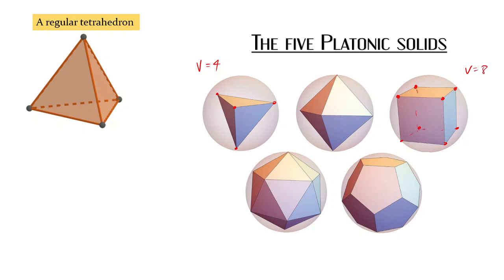In an octahedron, it does not have eight vertices — it has eight faces, that's why its name is octahedron. The number of vertices here, as you can think, is one, two, three, four — one is at the back side — six. So they have different numbers of vertices, faces, and edges.